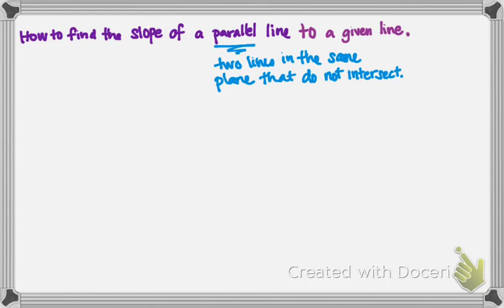But how is this helpful if we're given an equation of a line? So it also means that two lines that have the exact same slope. Now the key word here is slope.